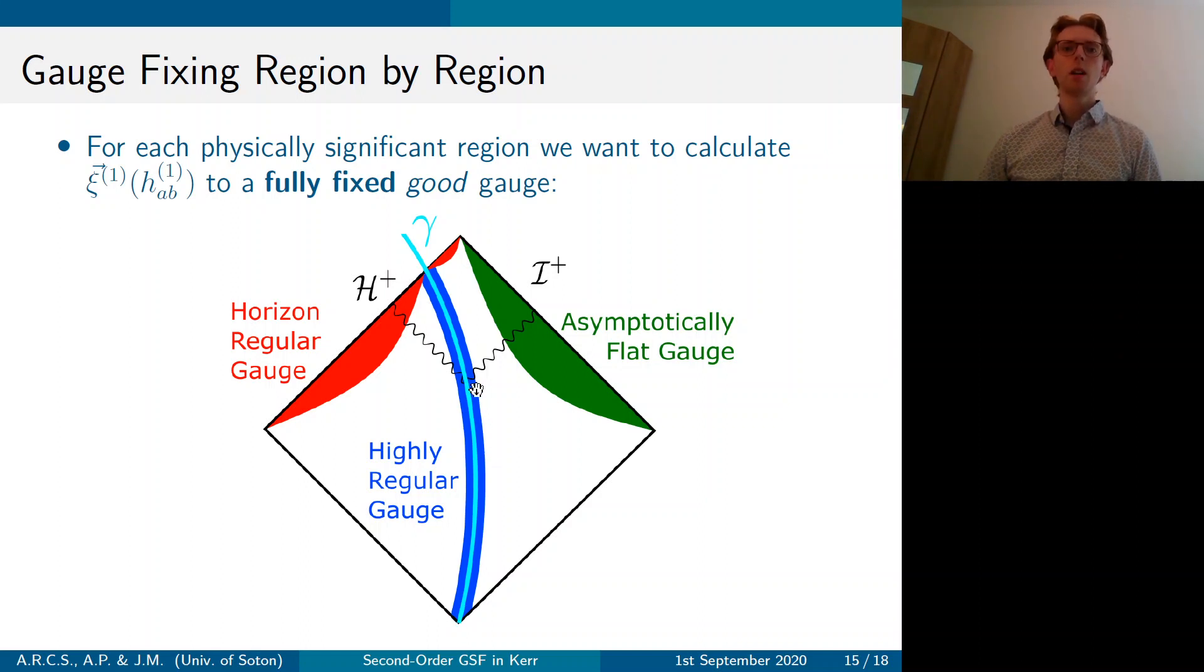But also as the compact object inspirals, it emits gravitational waves away from the system to asymptotic null infinity. So you want to have an asymptotically flat gauge in this region so that you can analyze the gravitational waves being emitted there. And similarly, gravitational waves are also emitted into the supermassive black hole horizon. So you want a horizon regular gauge there. Now today I'm going to give a technique on how to transform to an asymptotically flat gauge at scri plus.